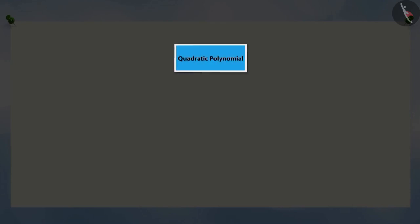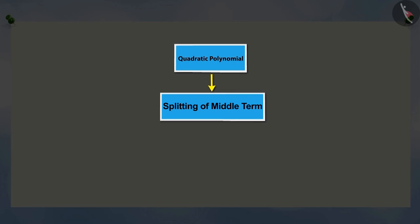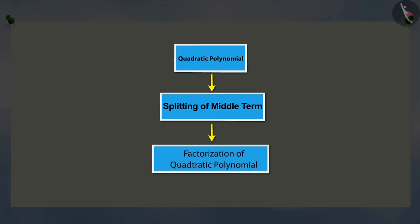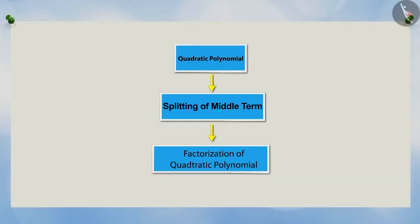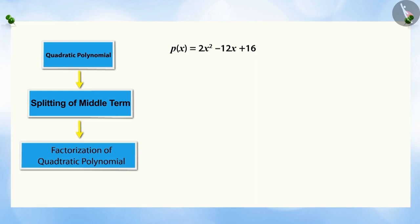Do you know that by splitting the middle term of a quadratic polynomial, it can be factorized? For example, the polynomial is 2X squared minus 12X plus 16. The term minus 12X is written as the sum of two such terms whose product is 32X squared.